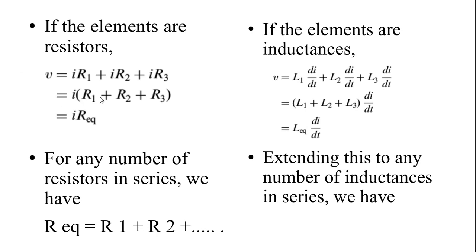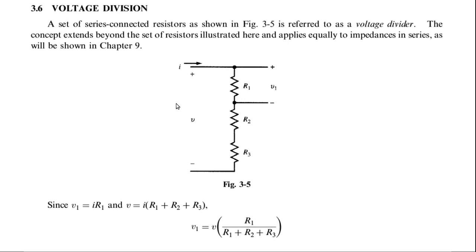So V1 = I × R1 and V = I × (R1 + R2 + R3). If you want to find the individual voltage V1, divide the two equations: V1/V = (I × R1) / (I × (R1 + R2 + R3)). The I cancels, giving V1/V = R1 / (R1 + R2 + R3). Cross-multiplying by V gives V1 = V × R1 / (R1 + R2 + R3). This formula gives the individual voltage across a resistor.